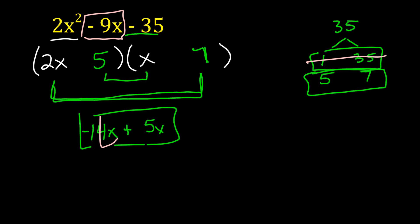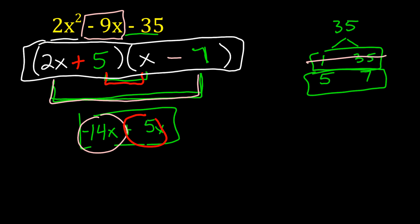So in order to get negative 14x, that was 2x times 7. So that means that the 7 has to be negative. And in order to get positive 5x, that's 5 times x. So that means the 5 has to be positive. So this answer here is our answer. These are the factors. 2x plus 5 and x minus 7.